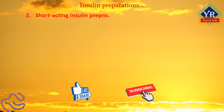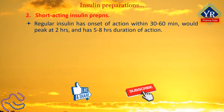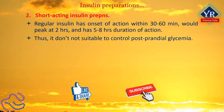Regular insulin is considered to be the short-acting insulin because it has an onset of action within 30 to 60 minutes, would peak at 2 hours, and has 5 to 8 hours duration of action. For this reason, it is not ideally suited to control post-prandial glycemia. Regular insulin has a slower onset and a longer duration of action than the rapid-acting insulin analogues after subcutaneous administration. It can also be given intravenously to treat diabetic ketoacidosis.